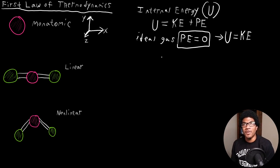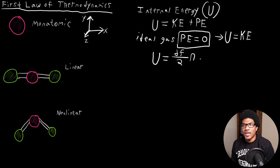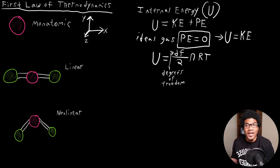In one of the very first videos, I mentioned something called the equipartition theorem from statistical mechanics, which introduced something called the degrees of freedom available to a molecule or particle. We basically define the internal energy using these degrees of freedom. U is going to be equal to the degrees of freedom divided by two, times NRT. This DF — the degrees of freedom — is going to depend on the identity of your gas particles, particularly their molecular shape.